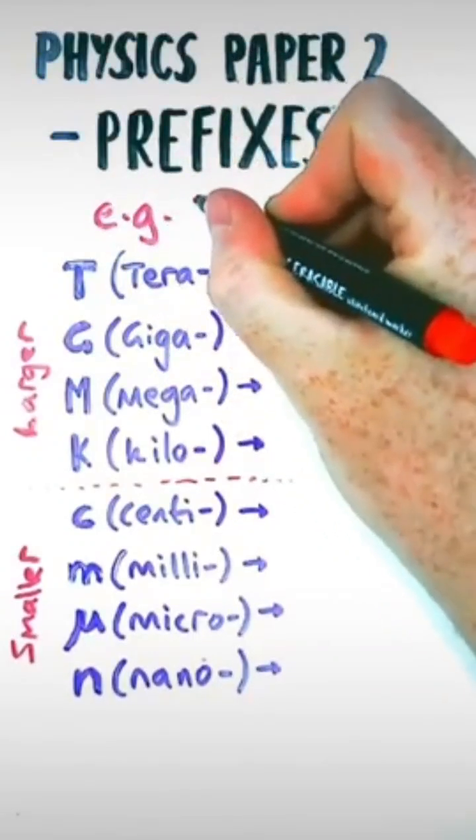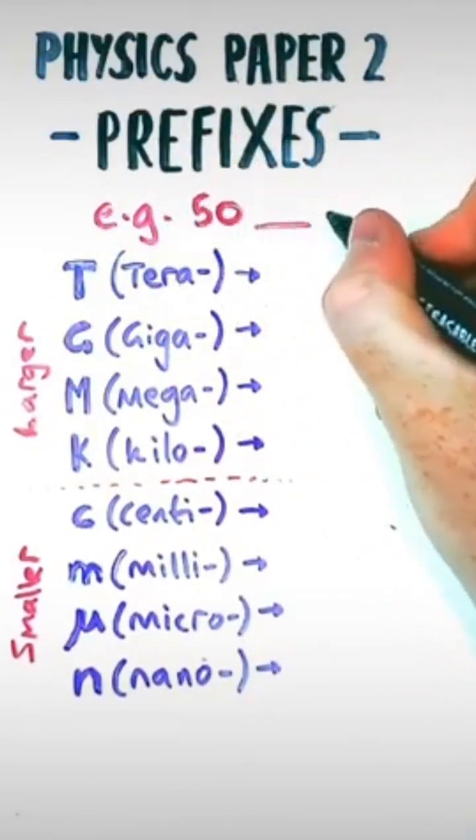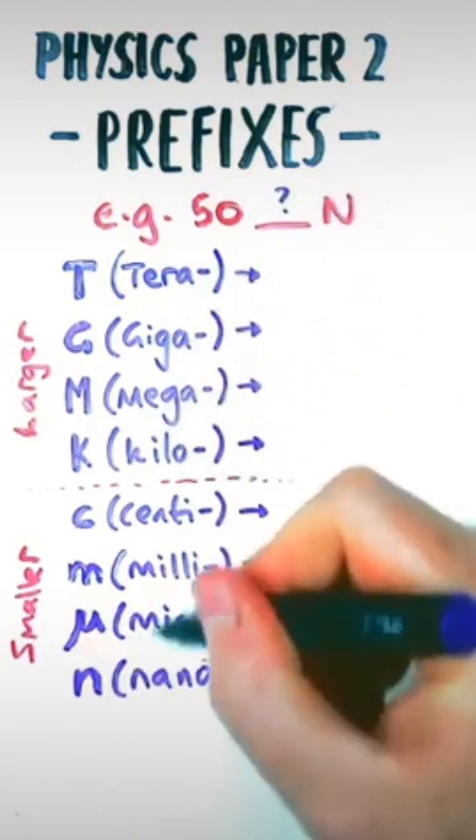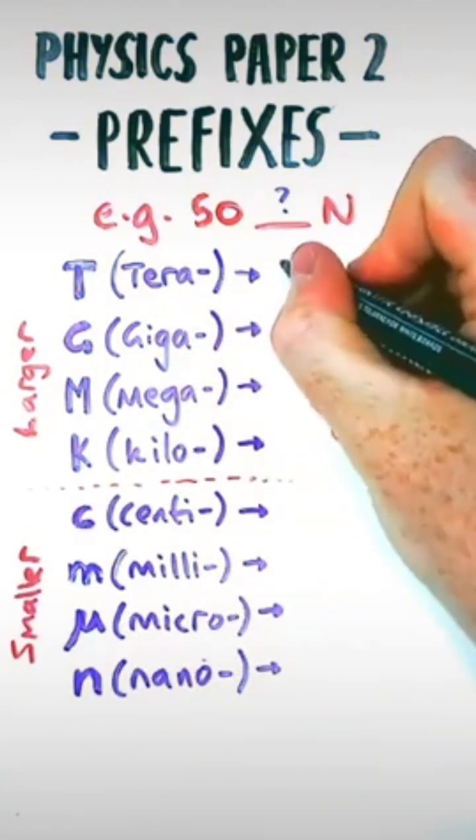Conversions or prefixes came up a lot in Physics Paper 1. So for example, if an answer was 50 something Newtons, if one of these letters is in there, it is a multiplication factor. For example, if it's a capital T...